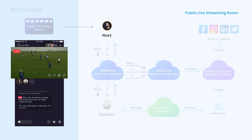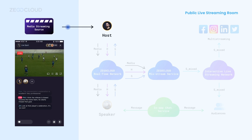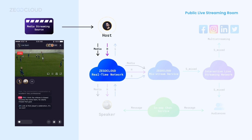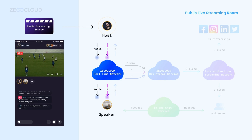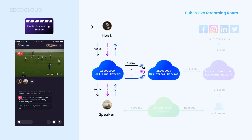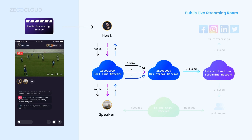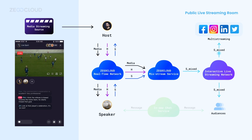In the public live streaming room, the host creates a room and publishes the content from the media streaming source along with his voice to the ZEGOCLOUD real-time network. The speaker co-hosts and plays streams from the network while publishing his own stream for real-time interaction with the host. Then all streams — host, speaker, and media — are mixed with the mixed stream service, created as a single stream, and published to audiences worldwide through the interactive live streaming network or multi-streamed to social media, ensuring visual and audio consistency on all ends.